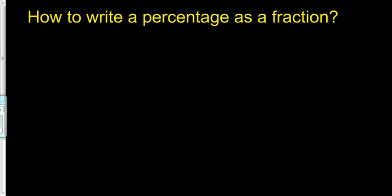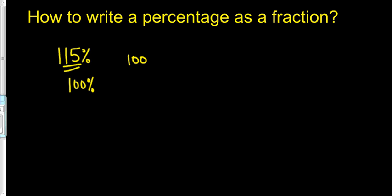Let's clear this off and try something else. What if we're talking about 115 percent? Percentage is really only supposed to go up to 100 — anything beyond that is just excess, like 15% more. So what's 115% of 100 M&Ms? Well, 100% of 100 is 100, but we need 15 more on top of that, giving us 115 M&Ms total.